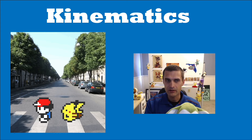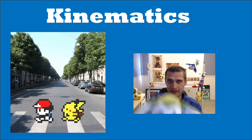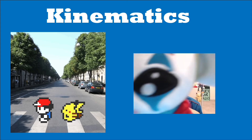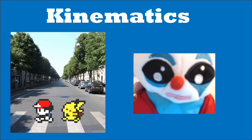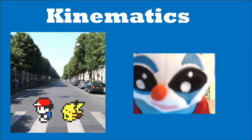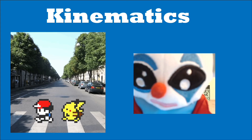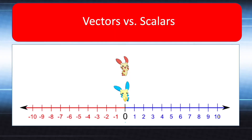The first section is going to be on motion with constant velocity. The first main concept to grasp is knowing what a vector quantity is and what a scalar quantity is.